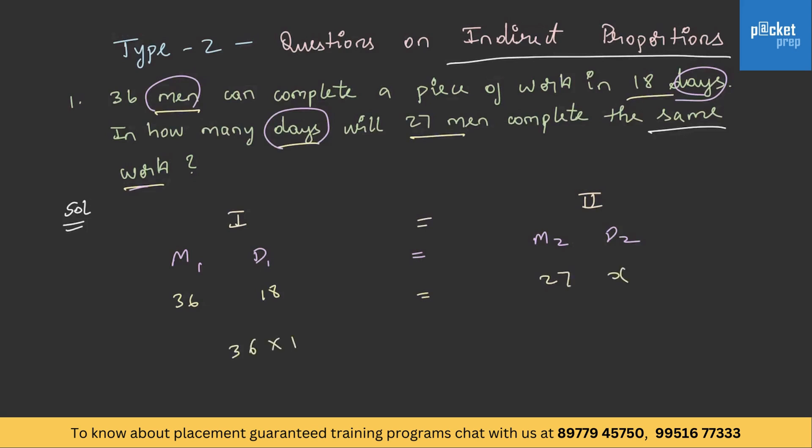36 into 18 by 27 is equal to X. On simplification, therefore X value will be 24. So 27 men can complete the same work in 24 days.